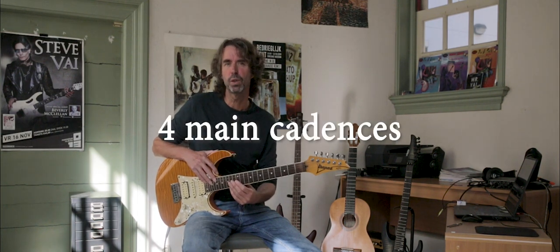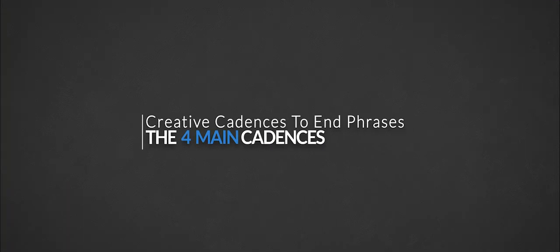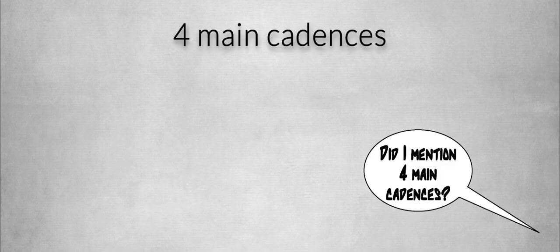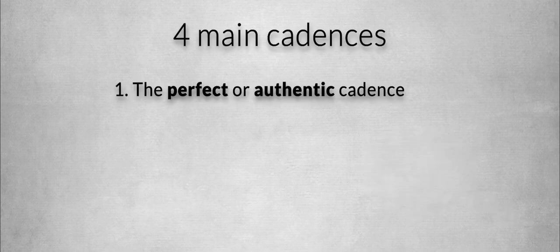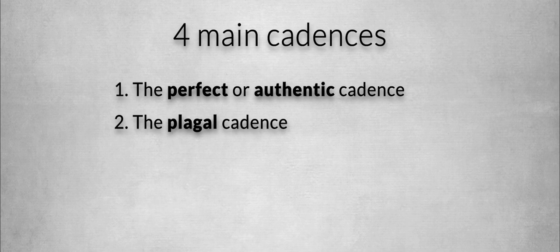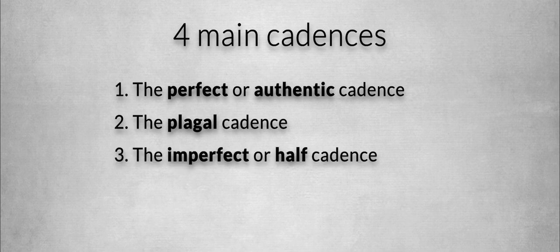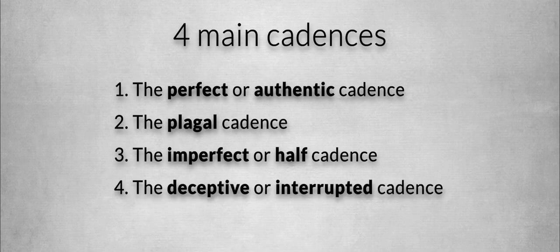There are a lot of possibilities. We first look at four classical or main cadences. We can define four main cadence progressions: the perfect or authentic cadence, the plagal cadence, the imperfect or half cadence, and the deceptive cadence.